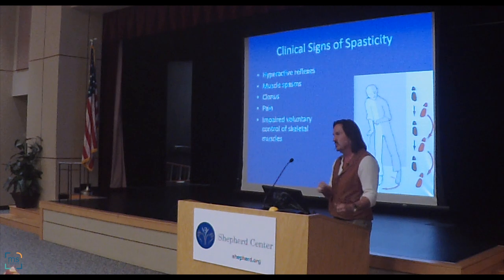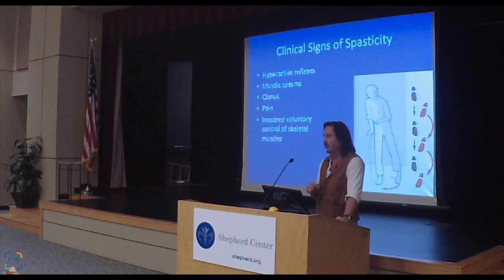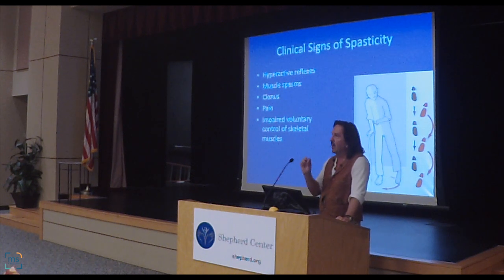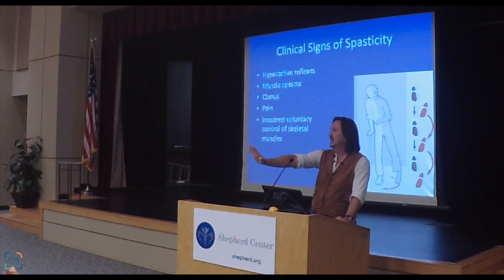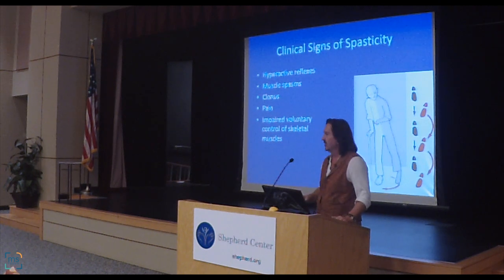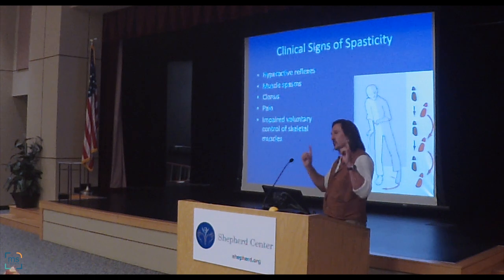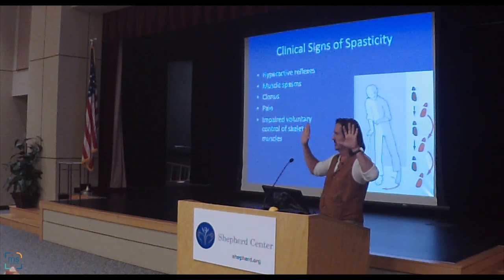Muscle spasms can be a sign of spasticity, as can the clonus we just mentioned. Pain — these spasms can be painful. Spasticity also causes impaired voluntary muscle movements. If your leg wants to extend out and push itself into the floor, that makes it very hard to move your leg and walk. Sometimes it's hard for us to separate out what's weakness and what's spasticity.